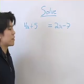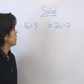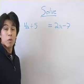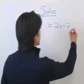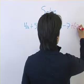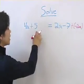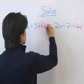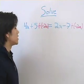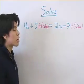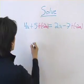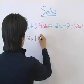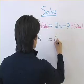We're going to solve the linear equation 4a plus 5 equals 2a minus 7. Since neither side can be simplified any further, we're going to use the addition property of equality to add negative 2a to both sides. We do this in order to isolate all variable terms on one side and all constant terms on the other. So this equation becomes 2a plus 5 equals negative 7.